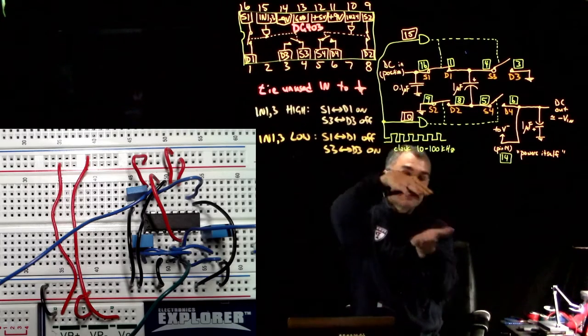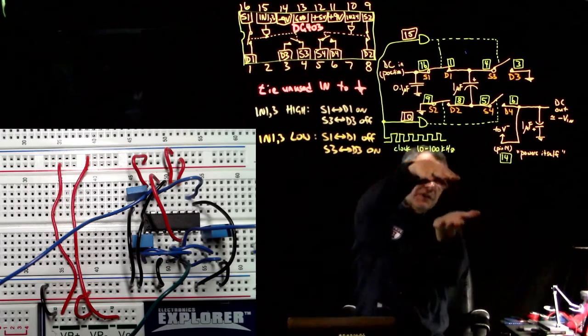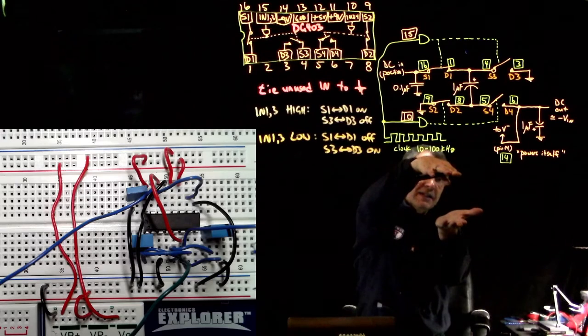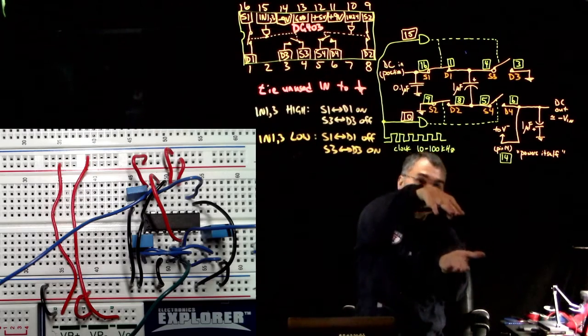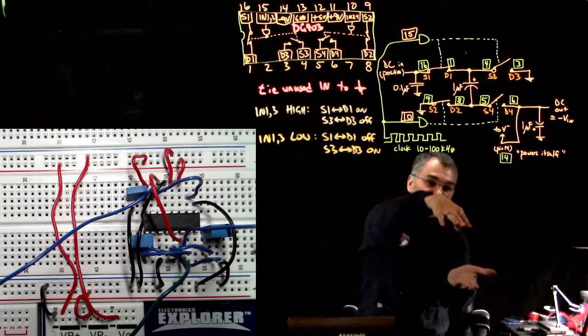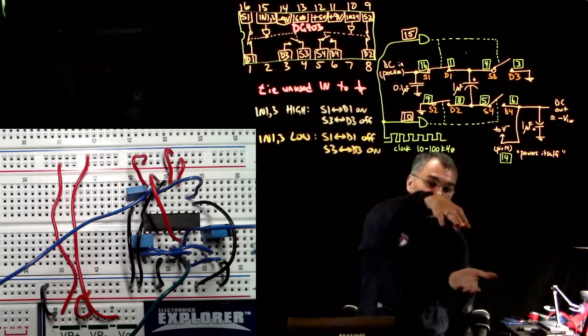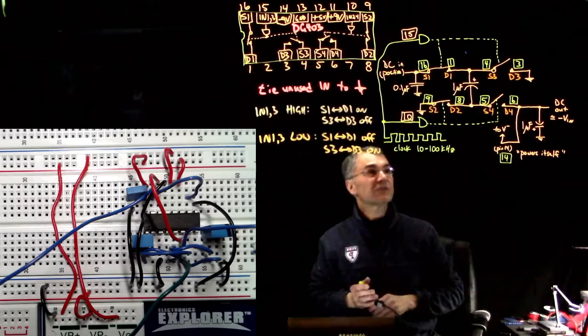The capacitor, you charge it up, and then you disconnect it, and you kind of float it down, and you connect this, and lo and behold, this point is a negative voltage. So that's kind of a neat trick.